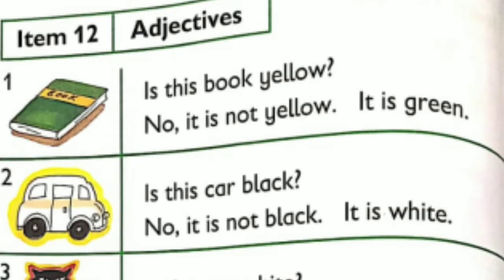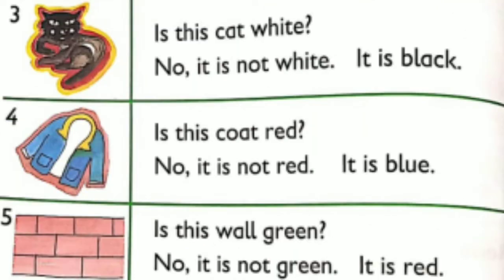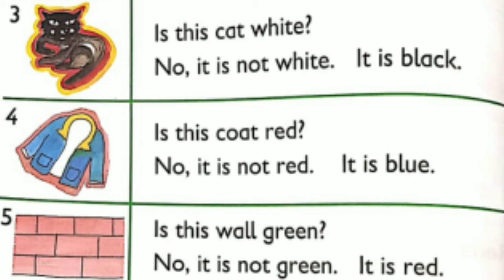Item 12 continued — Colors. Is this book yellow? No, it is not yellow. It is green. Is this car black? No, it is not black. It is white. Is this cat white? No, it is not white. It is black. Is this scarf red? No, it is not red. It is blue. Is this small green? No, it is not green. It is red. Is this ball brown? No, it is not brown. It is yellow. Is this jar blue? No, it is not blue. It is brown.